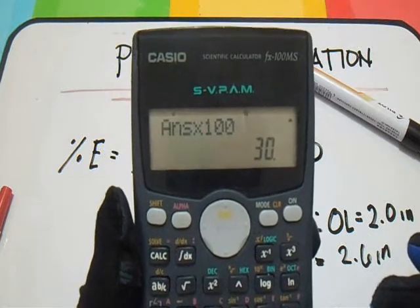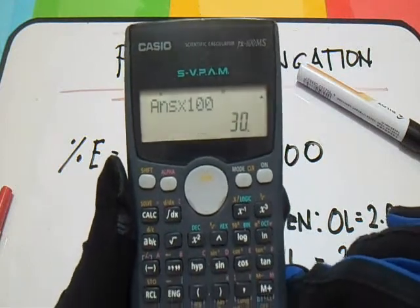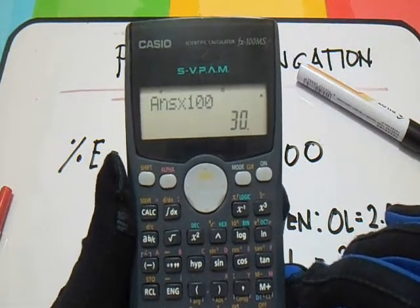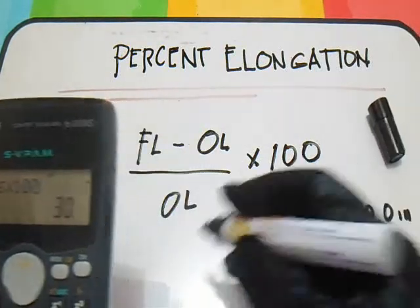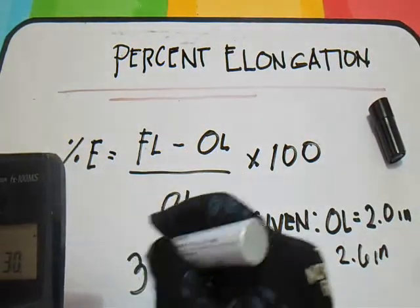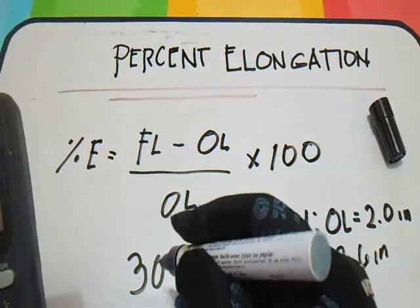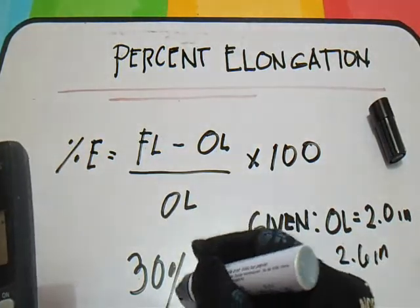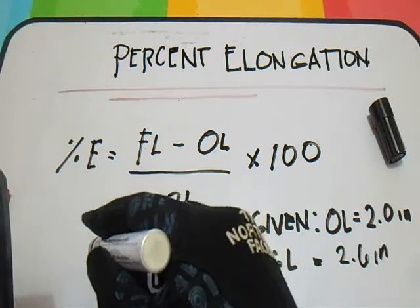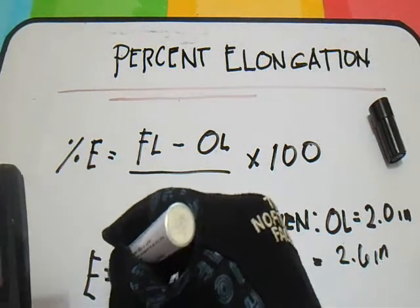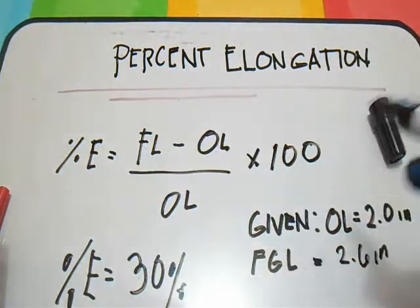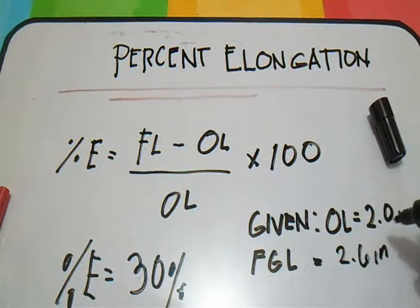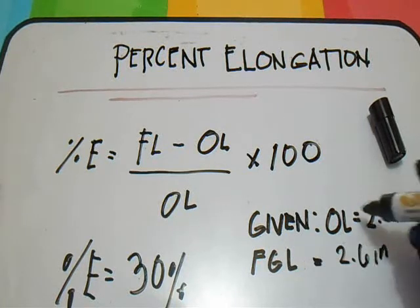Our percent elongation is 30 percent. That is our answer for the given original length of 2.0 inches and final gauge length of 2.6 inches.